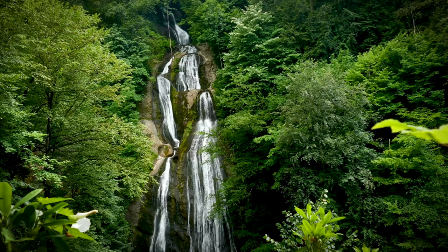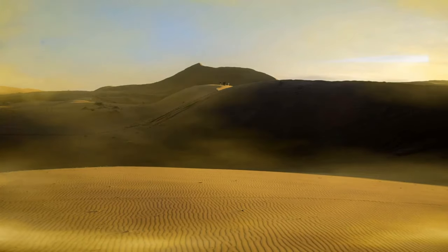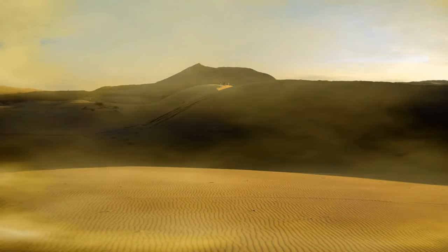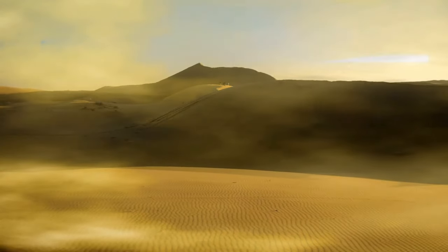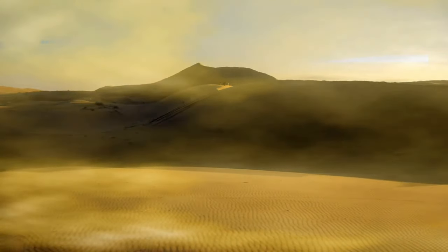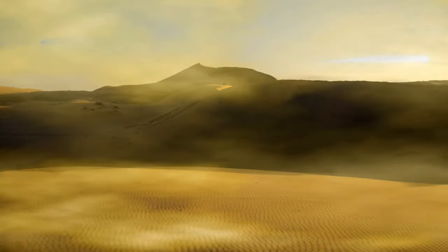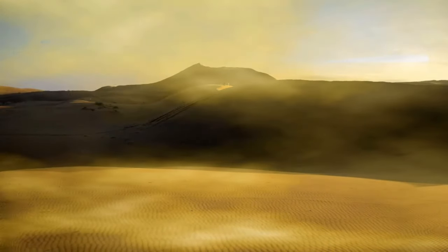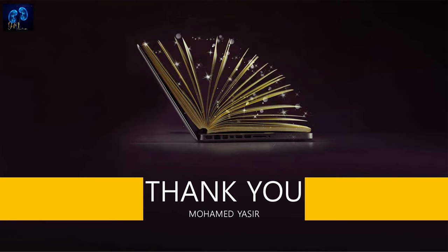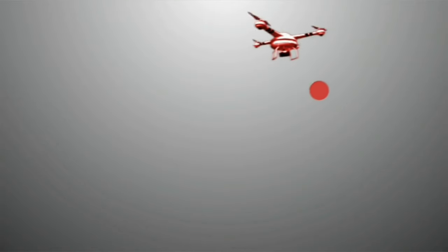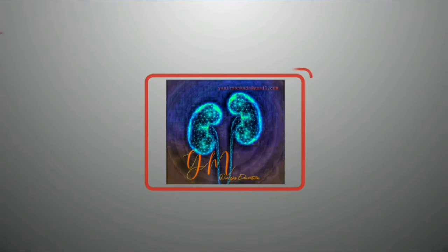Convection is another principle — solute travels along with the solvent. An example is in a desert when wind blows and all the dust moves along with the wind. This is also an example of convection. So convection is simply the process where solutes go along with the solvent. Questions related to this topic will be discussed in the next video. Thank you for watching — stay tuned for more.